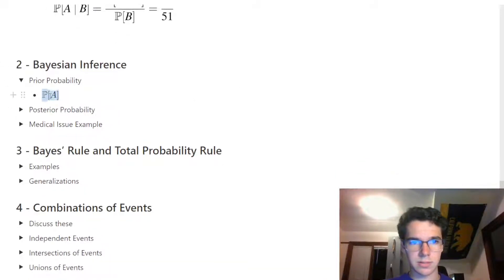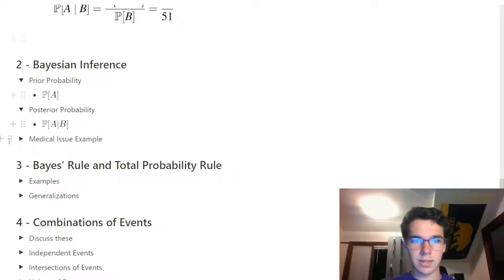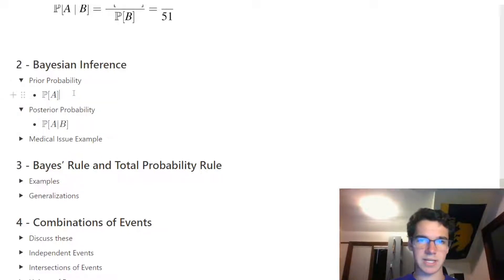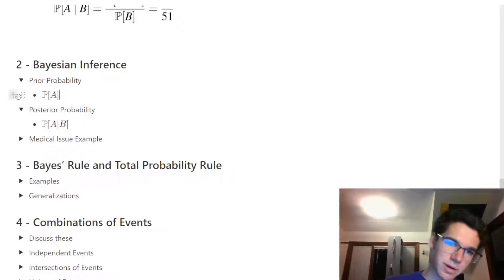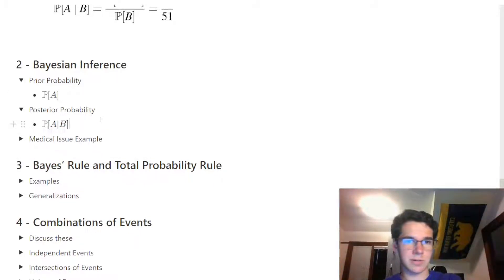What is prior probability? In this context, given B, what is the probability of A — that's the posterior probability of A. The prior probability of A is before considering B. So when we haven't considered B, this is prior to B. When we are considering B, this is posterior to B.